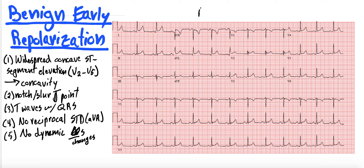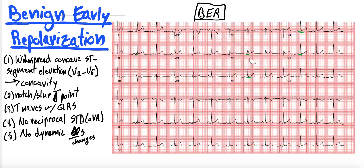So let's look at this EKG of benign early repol and kind of go through our criteria. You might first glance at this EKG and say, oh no, we have like a box of elevation, maybe a half box elevation here, and you're thinking it could be a STEMI — we have a bunch of boxes of elevation. Some EKGs are even more impressive with their elevation. But this is when we dive in deep and ask, is it just benign early repol? Say this is a 30-year-old male coming in with what sounds like musculoskeletal chest pain.